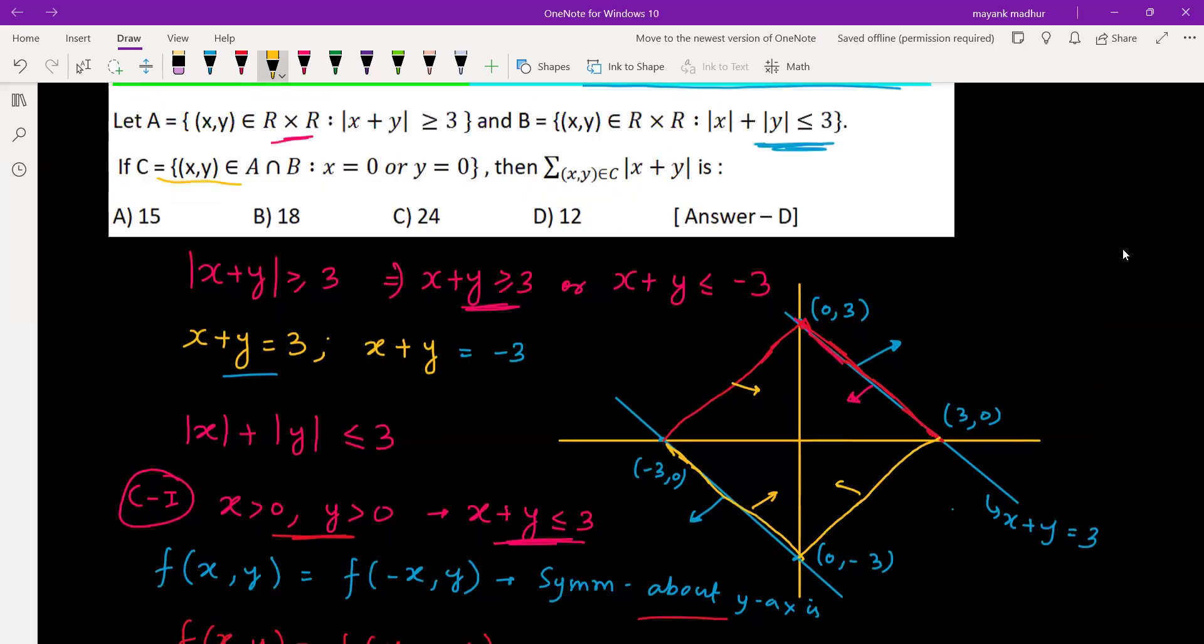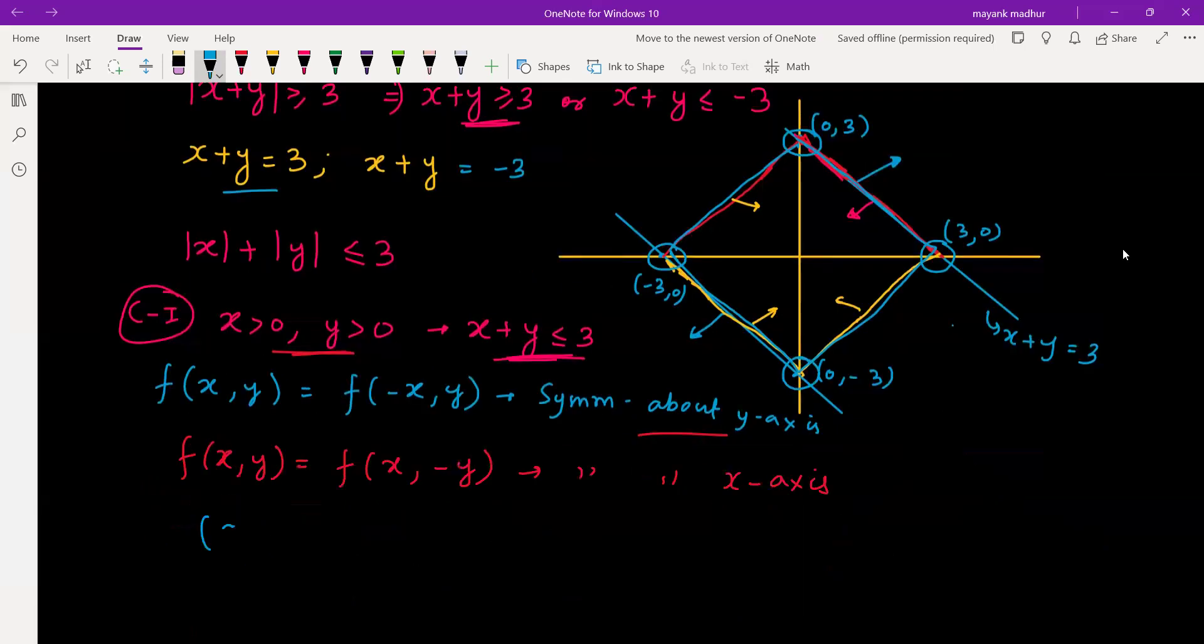Now C is all those collections of (x, y) which are both present in A and B, and where x equals 0 or y equals 0—that means the boundary line. It should intersect the x-axis at these two points or the y-axis at these two points. So we got four points, and those are (3, 0), (0, 3), (−3, 0), and (0, −3).